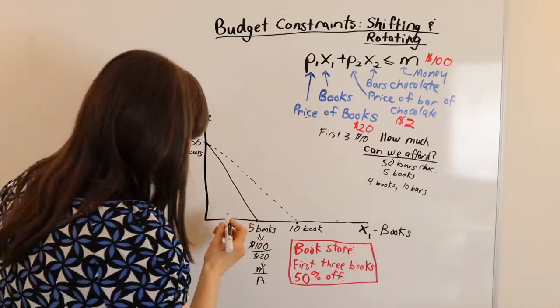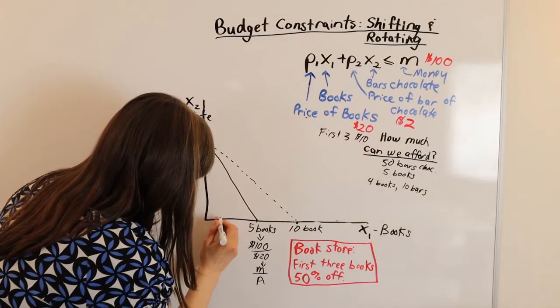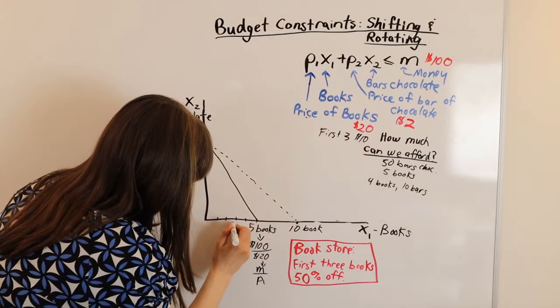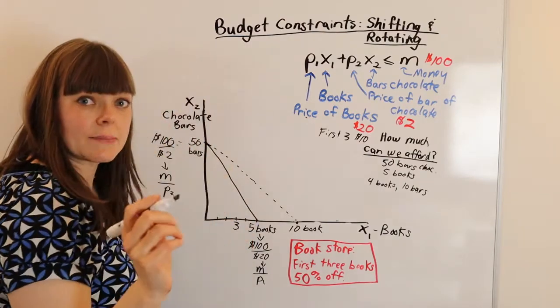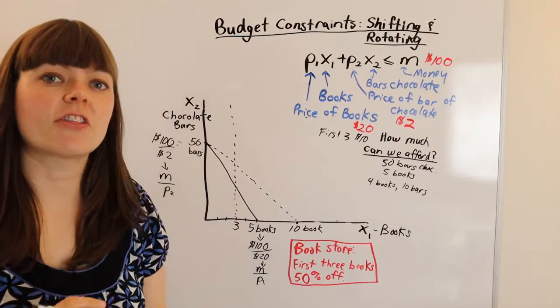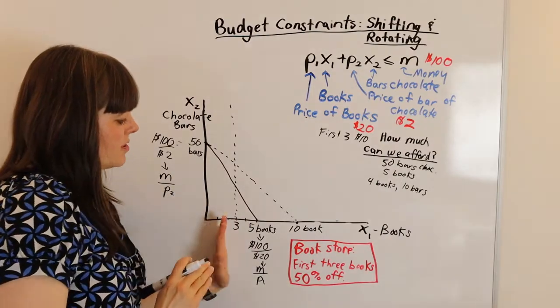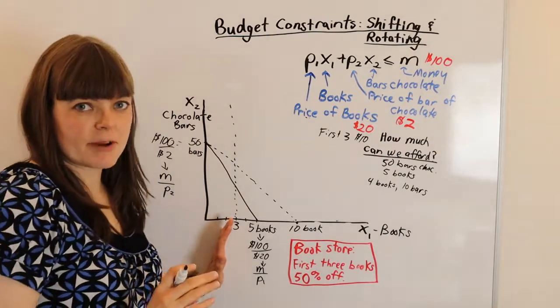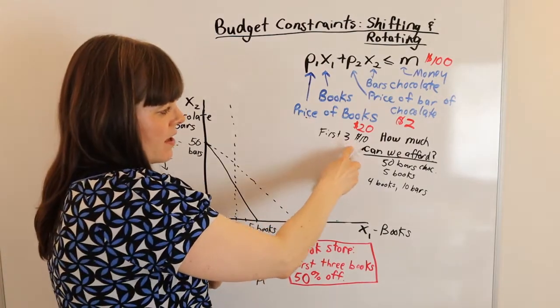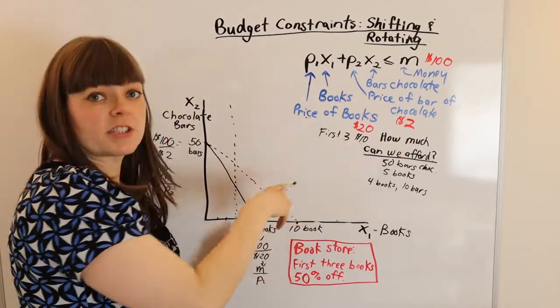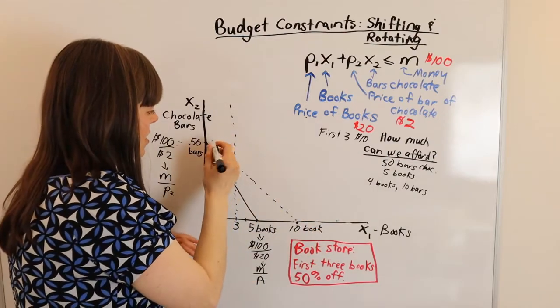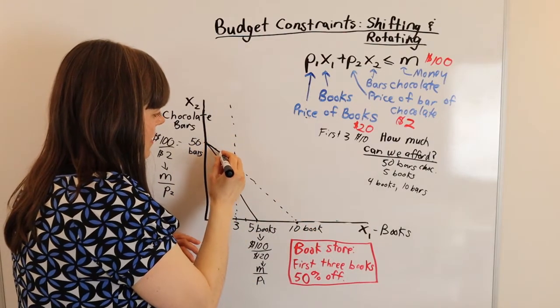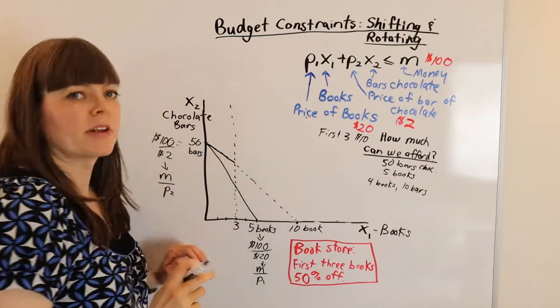Now, if we look at three books, so we might want to mark three. So we have three books here. And we might want to label that clearly on the graph. Well, for the first three books, we are going to experience a budget constraint as if it were the budget constraint we constructed when all books were $10 a piece. So for the first three books, this will actually be our budget constraint.